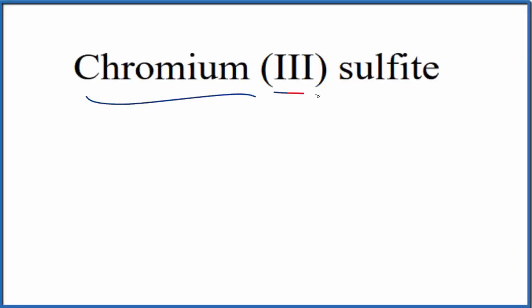To write the formula for chromium (III) sulfite, the first thing we'll do is write the element symbol for chromium. That's Cr.